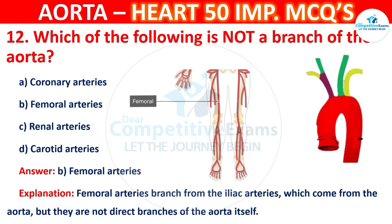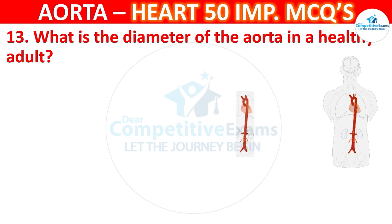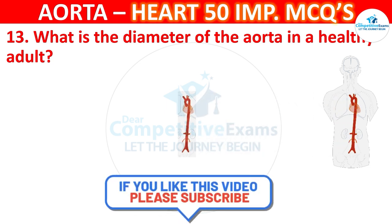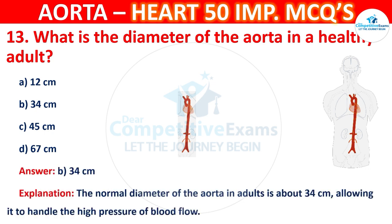Question number 13: What is the diameter of the aorta in a healthy adult? Options are 1–2 cm, 3–4 cm, 4–5 cm, or 6–7 cm. The correct answer is B — 3–4 cm. The normal diameter of the aorta in adults is about 3–4 cm, allowing it to handle the high pressure of blood flow.